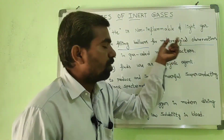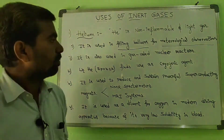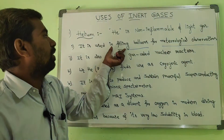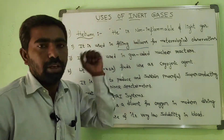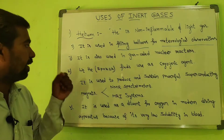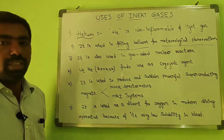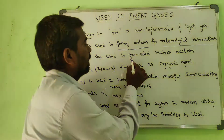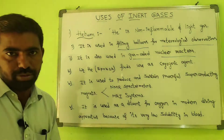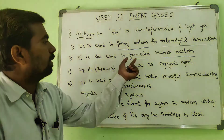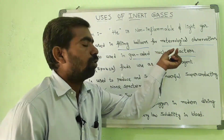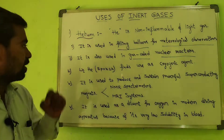Helium is used for filling the balloons in meteorology — that is the first use of helium. It is also used in gas-cooled nuclear reactors.